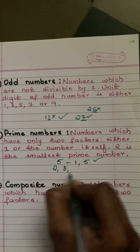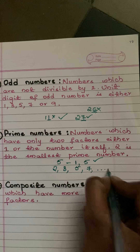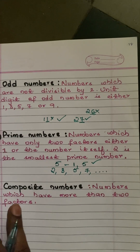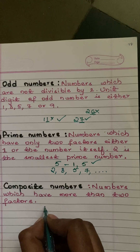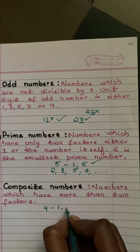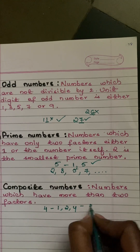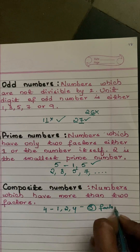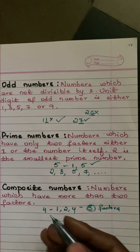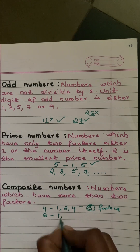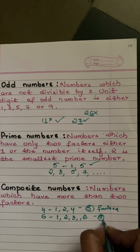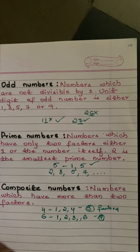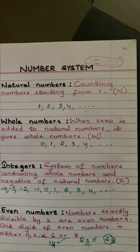Composite numbers are exactly the opposite of prime numbers. Numbers which have more than two factors are called composite numbers. For example, four has factors one, two, and four — three factors total — so it is composite. Six has factors one, two, three, and six — four factors — so it is also composite. I hope you have understood what I explained today. Please like, share, and subscribe. Thank you!